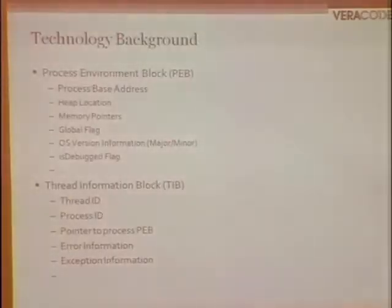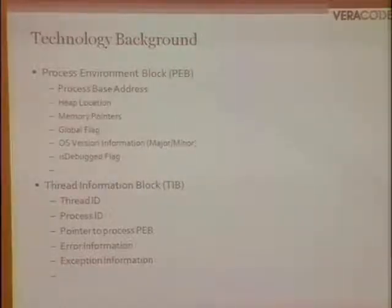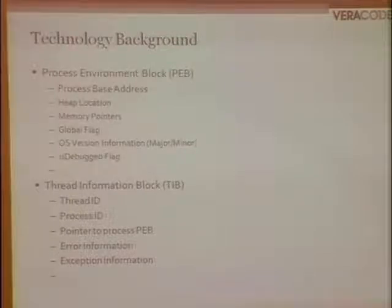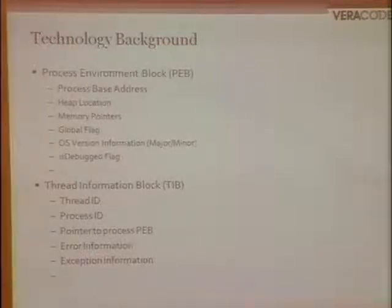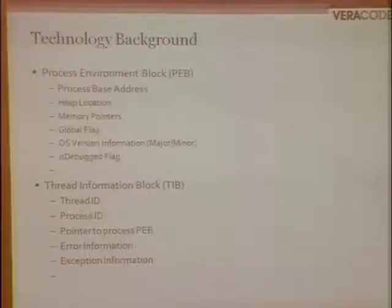Process and thread block technology background: these structures are huge. The Process Environment Block (PEB) holds all user-mode parameters associated with the current process — the process base address, heap locations, memory pointers, global flags, the being-debugged flag, and more. The Thread Information Block (TIB/TEB) contains all parameters at the thread level: thread ID, process and parent process ID, a pointer to the PEB, error information, and exception information. These structures hold information we can directly query to determine if our process or thread is running underneath a debugger.